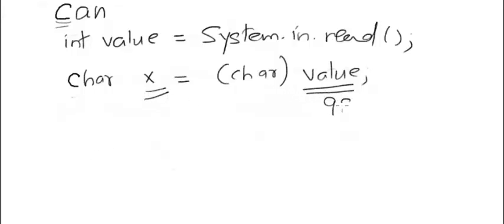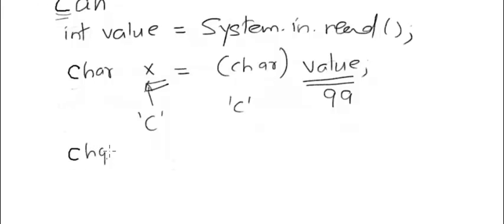The 99 here would be viewed as a character, that would be C, and x will have C. We can actually combine these two statements into a single one to get rid of this intermediate variable value and write as follows: char x equals char system.in.read.